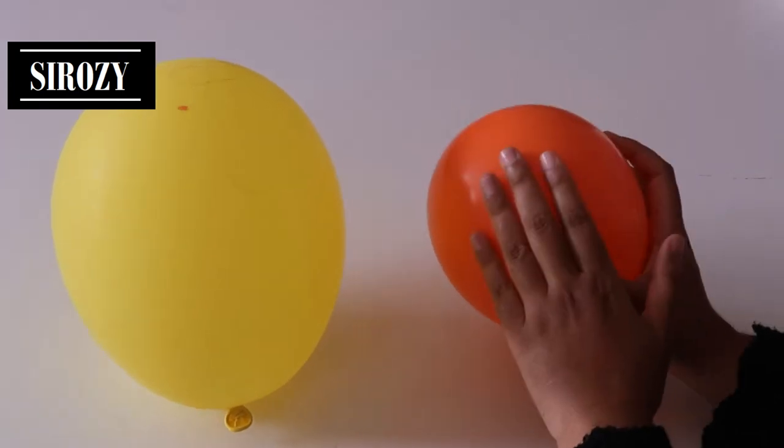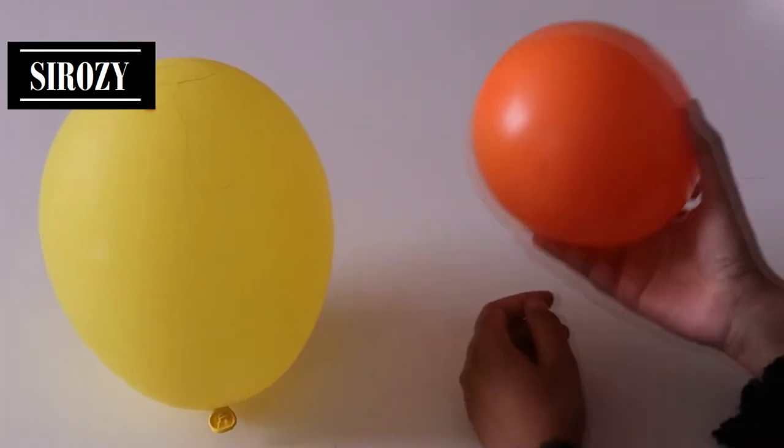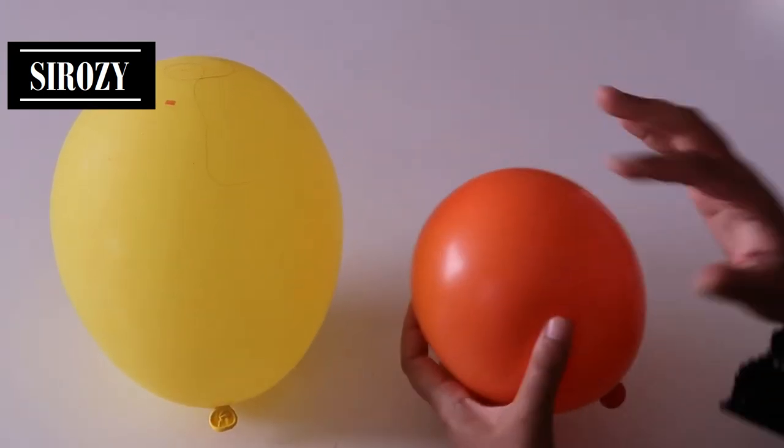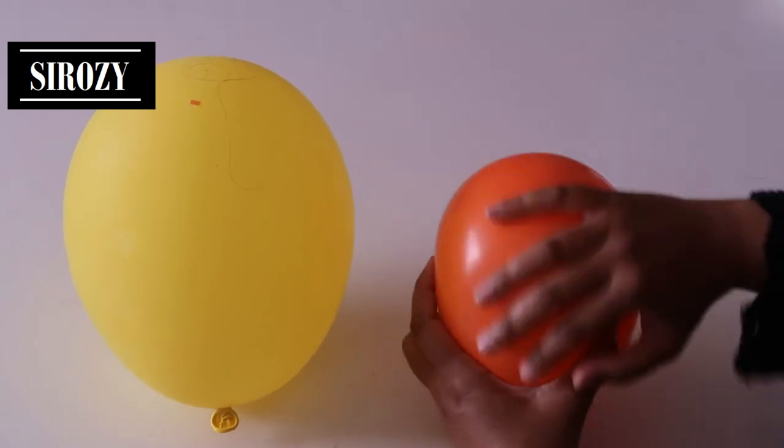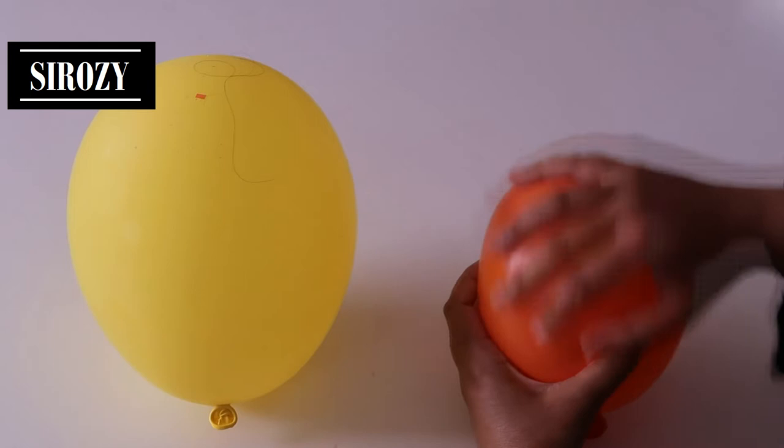After inflating the second balloon, we will make it static and we will do so by rubbing it on our clothes, on our hair, or simply with our hand. I'm going to use my hand and I'm going to show you. Keep on rubbing it for a little while to make it static.